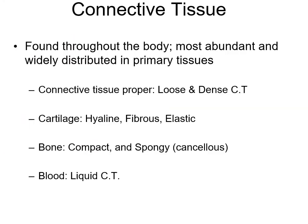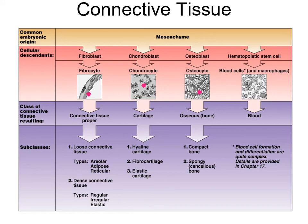Connective tissue is found throughout the entire body - it is the most abundant and widely distributed primary tissue. Connective tissue proper is made up of loose and dense connective tissue. There's cartilage with three types: hyaline, fibrous, and elastic. There's bone with two basic types: compact and spongy (cancellous). And there's blood, which is a liquid connective tissue - and add lymph as a liquid connective tissue too.